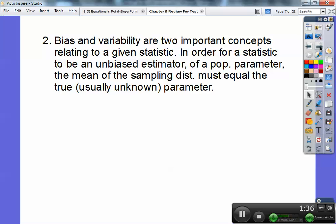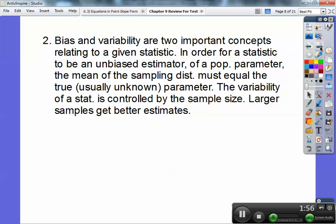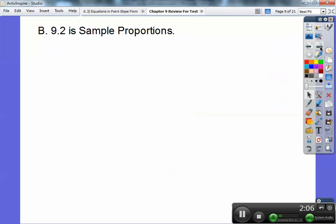Bias and variability are two important concepts related to the given statistics. In order for a statistic to be an unbiased estimator of a population parameter, the mean of the sampling distribution must equal the true, which is usually unknown parameter. So we've got to set it equal to it. We won't know it, so that's why it's equal. The variability of a statistic is controlled by the sample size. Obviously larger samples get better estimates.